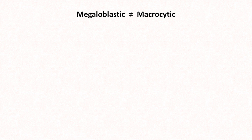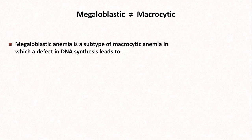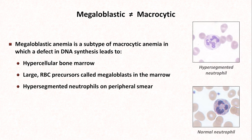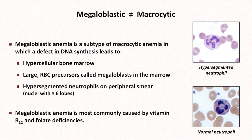A term that you might hear come up from time to time is megaloblastic, and a common mistake I've encountered is for students to use megaloblastic as a synonym for macrocytic, but these are not the same thing. Megaloblastic anemia is a subtype of macrocytic anemia in which a defect in DNA synthesis leads to a hypercellular bone marrow, unusually large RBC precursors called megaloblasts in the marrow, and hypersegmented neutrophils on a peripheral smear. Normal neutrophils have a nucleus that is divided into multiple lobes, but a nucleus that has six or more is pathologic. Some references also describe it as indicative of pathology if a significant number of a person's neutrophils have five lobes.